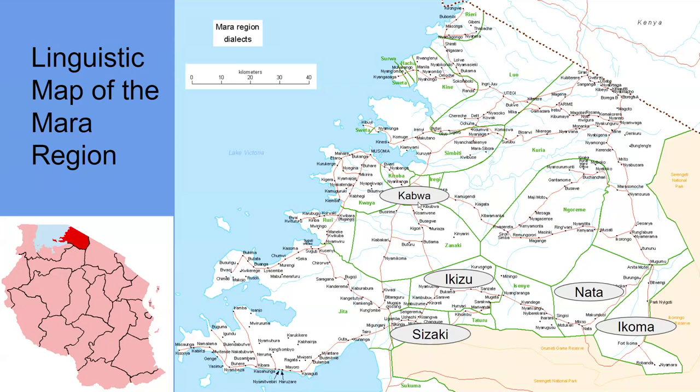Specifically, I wanted to highlight the groups we've been working with on dictionaries. The Kabwa are up fairly close to Musoma. Then we have Ikizu and Sizaki right next to each other, and Nata and Ikoma out to the other side. Of course, when you're starting a dictionary project, one of the main things you have to be concerned with is how you're going to get the words for the dictionary — what we refer to as word collection.